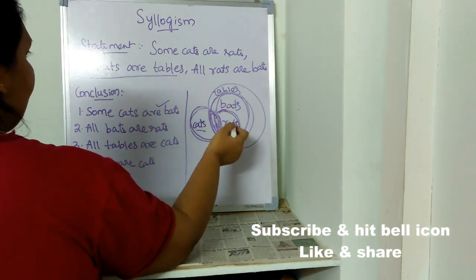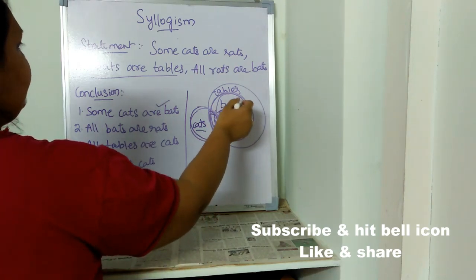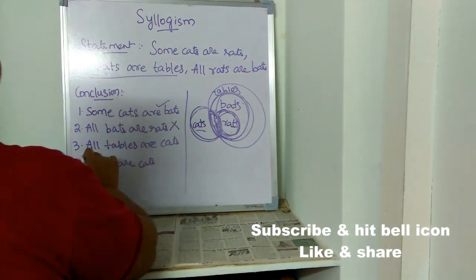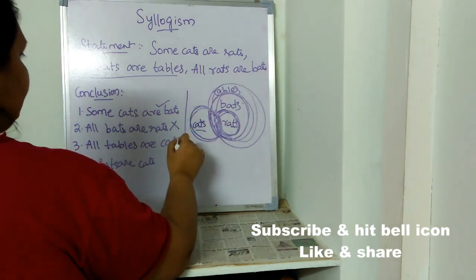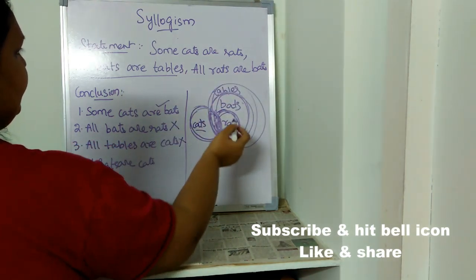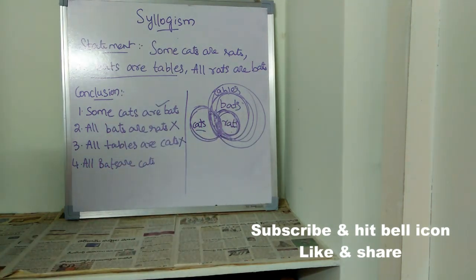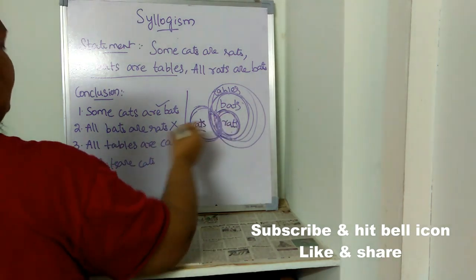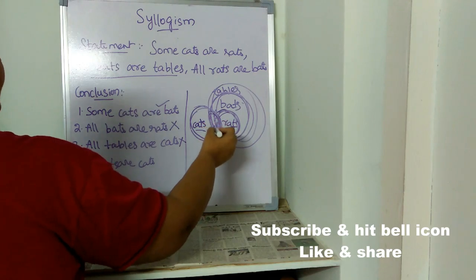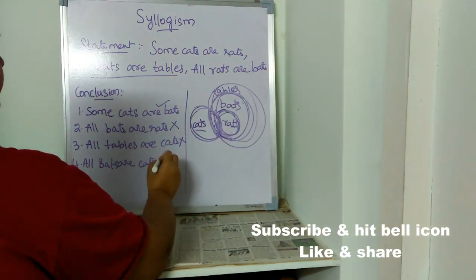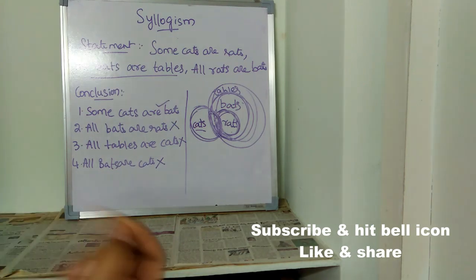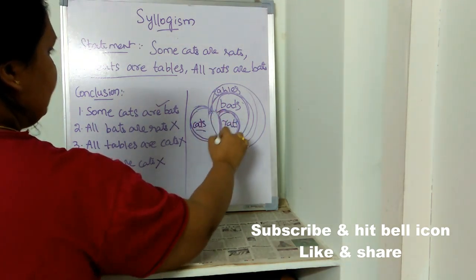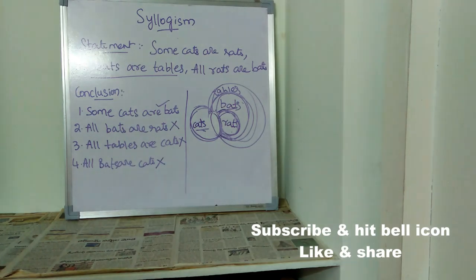Conclusion two: all bats are rats — this is wrong, because not all bats are rats. Conclusion three: all tables are cats — this is wrong, because tables and cats are different. Conclusion four: all bats are cats — this is also wrong, because there is only a small common point; bats and cats are different. So the only correct conclusion is the first one — some cats are bats — because there is a common point between cats and bats.